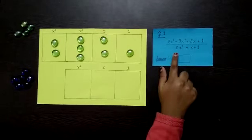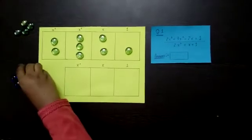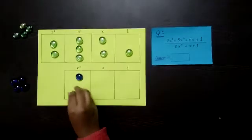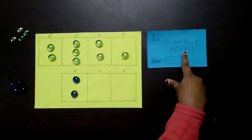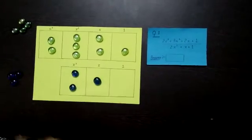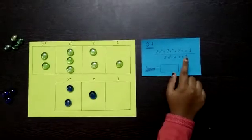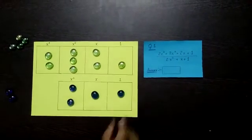And in the denominator we have 2x², so in the x² box we are going to add 2 marbles. Then here we have single x, so we are going to add 1 marble to the x box. And here we have 1, so in the 1 box we are going to add 1 marble.